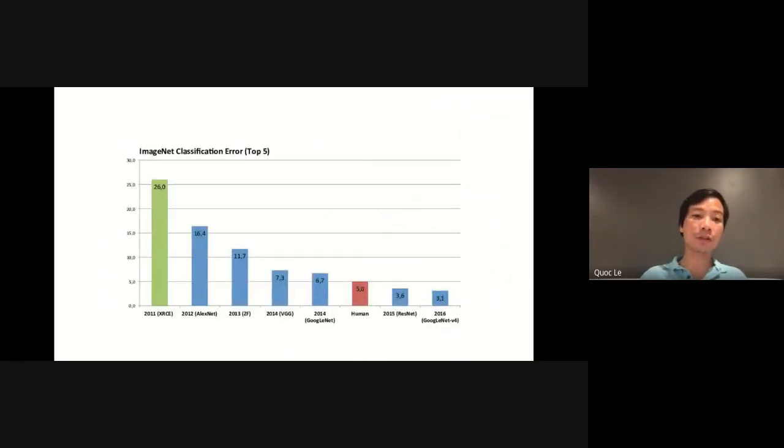In the past few years, we have seen rapid progress in using deep learning for computer vision. For example, on the ImageNet dataset, the error rate has dropped significantly over the years.